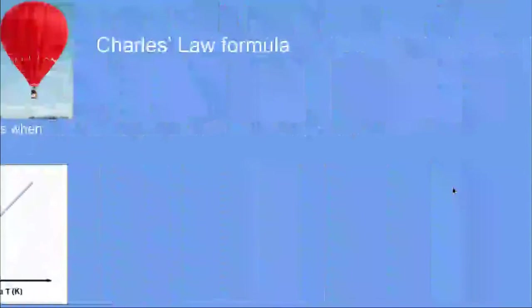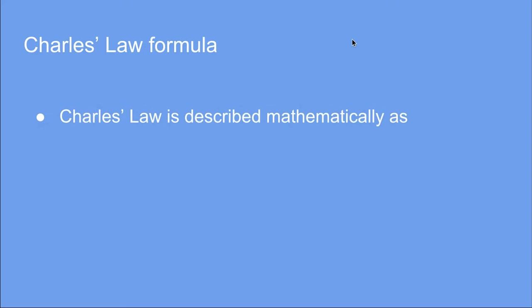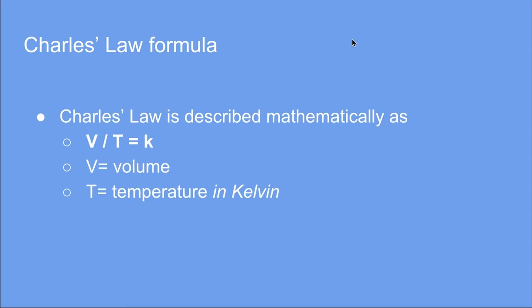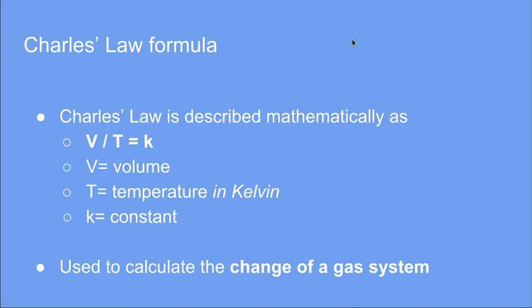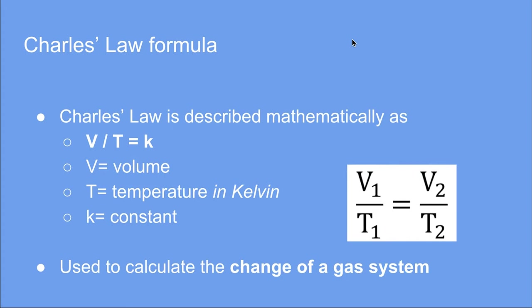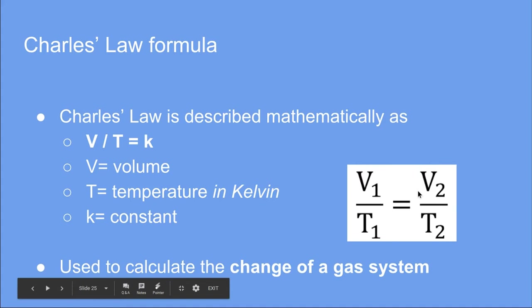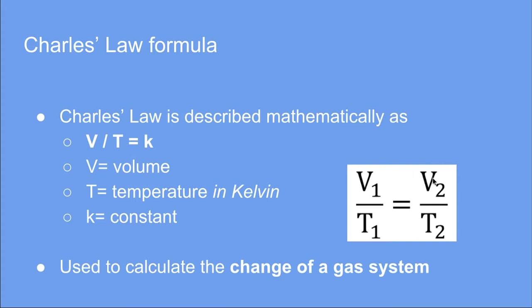Now let's look at Charles' Law in terms of math. Using symbols, V over T equals K, where V is my volume, T is the temperature measured in Kelvin, and K is my constant. If I pair two sets of properties for the same gas at two different times, my formula becomes V1 divided by T1 equals V2 divided by T2.